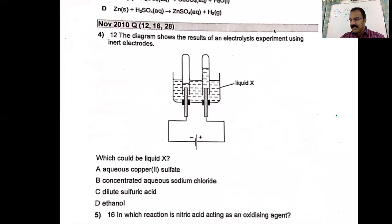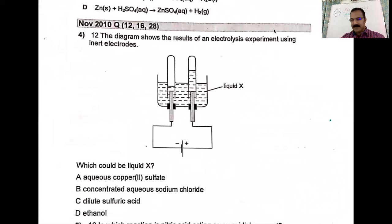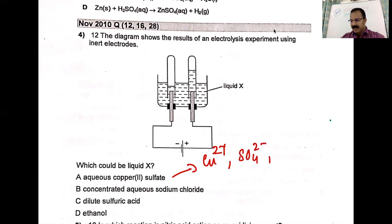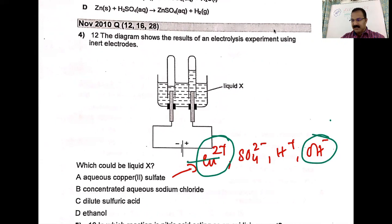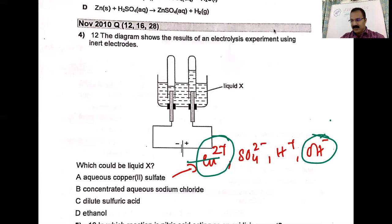Question four: the diagram shows results of an electrolysis experiment using inert electrodes — which could be liquid X? For aqueous copper sulfate, you have Cu²⁺, SO₄²⁻, H⁺, and OH⁻. Copper undergoes reduction and OH⁻ undergoes oxidation, giving copper metal and oxygen gas. But the diagram shows both products are gases in a ratio — at the cathode it is 2:1. So aqueous copper sulfate doesn't fit.